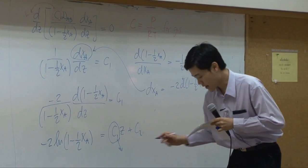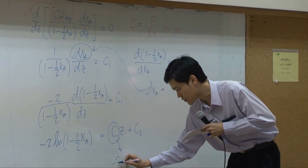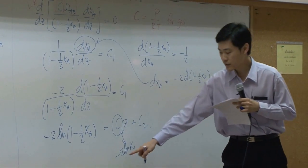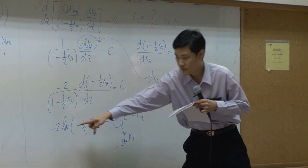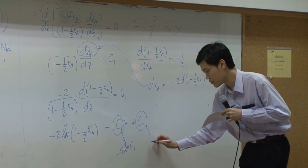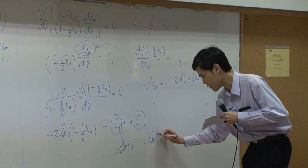So I'm going to take C1 to be minus 2 ln K1. Minus 2 was put there so that this one would be gone. C2 would be taken to be minus 2 ln of K2.